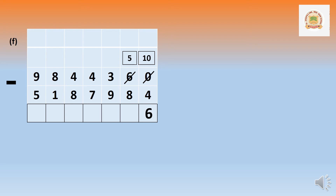Now 5 minus 8 — not possible. Borrow from 3 hundred, giving 100. The hundreds become 200. After taking, 5 becomes 150 — in simple form 15. Fifteen minus 8 equals 7. In the hundreds place: 200 cannot minus 900. Borrow from thousands — the 4 becomes 3, and the hundreds become 1200. Twelve minus 9 equals 3.